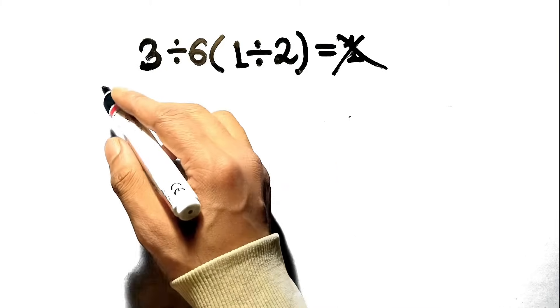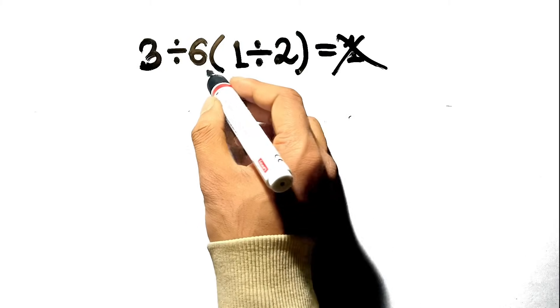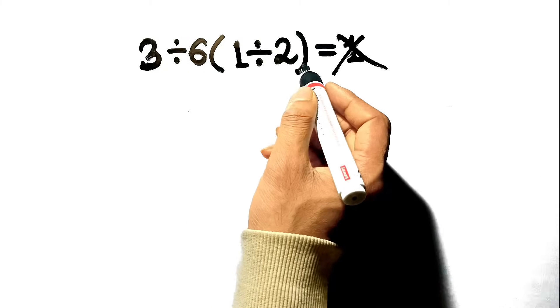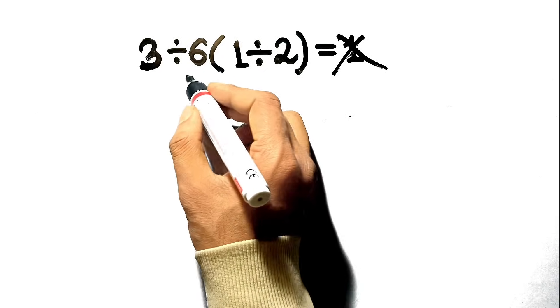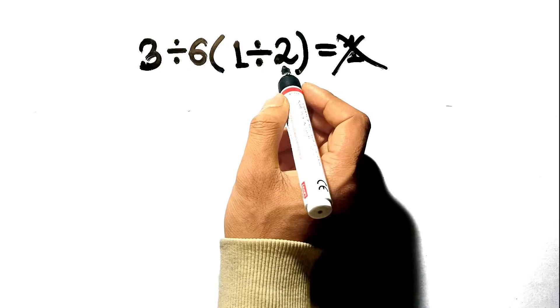When most people see the expression 3 divided by 6 times the quantity 1 divided by 2, they feel this pull to simplify the multiplication right away. Here's the common incorrect path.